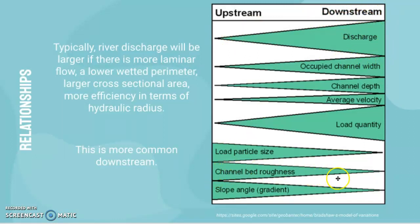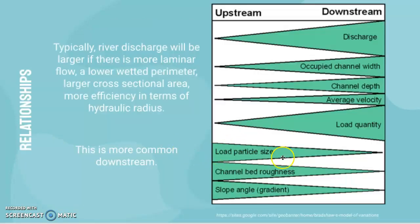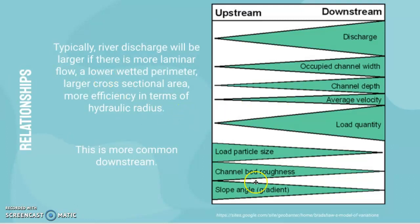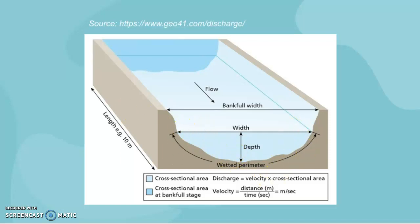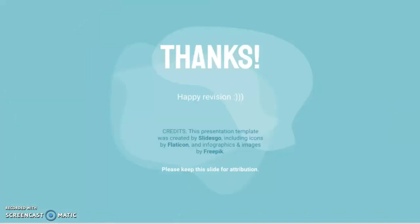As you move downstream, the channel bed becomes less rough, meaning the wetted perimeter may actually decrease. Further upstream, the riverbed and banks tend to be more jagged due to larger load sizes, resulting in a larger wetted perimeter. Downstream, the bed is smoother, the wetted perimeter is lower, the cross-sectional area is larger due to less large load, and therefore the hydraulic radius is larger — meaning the river tends to become more efficient as you move downstream.